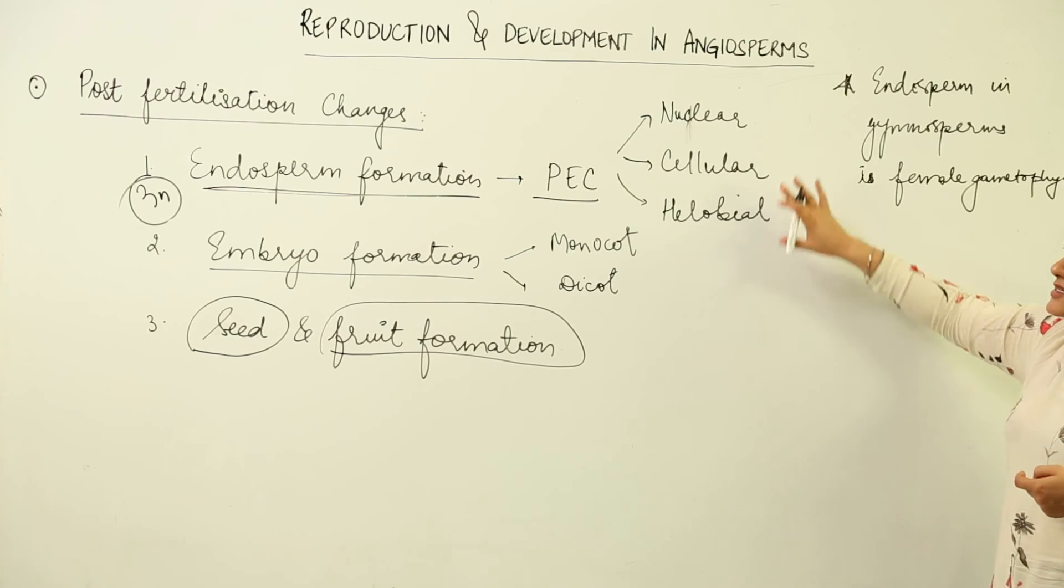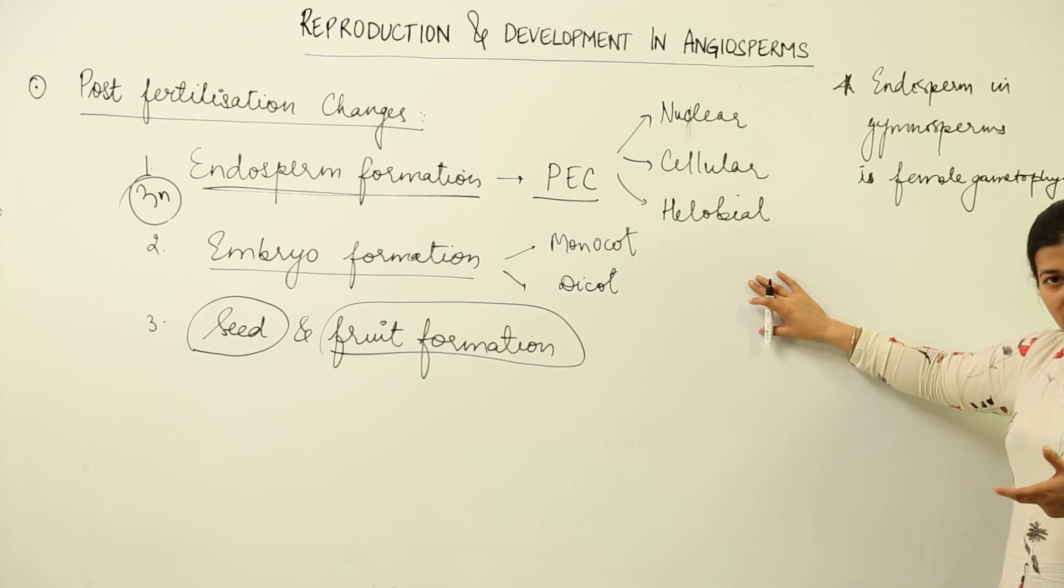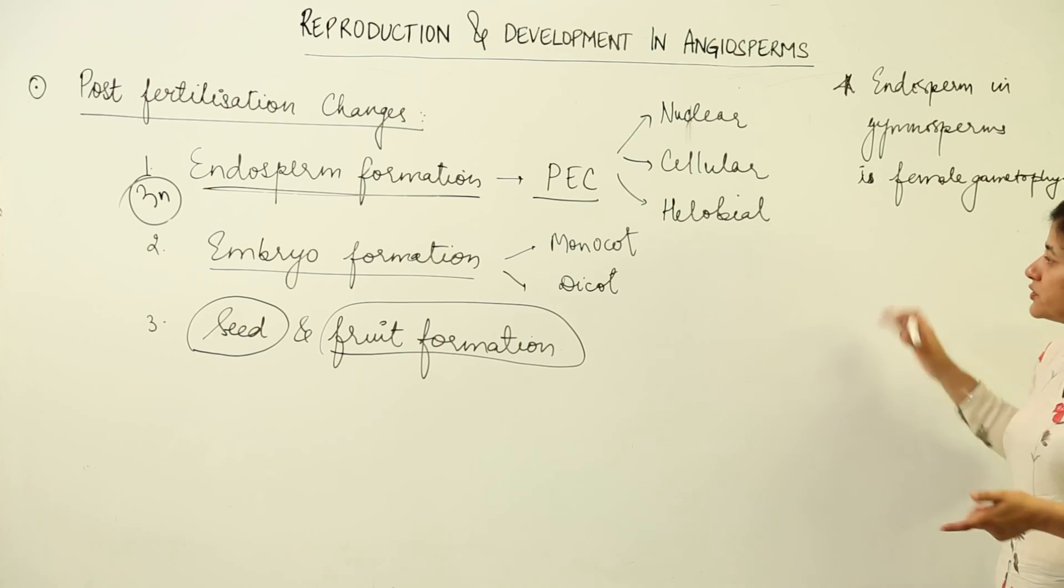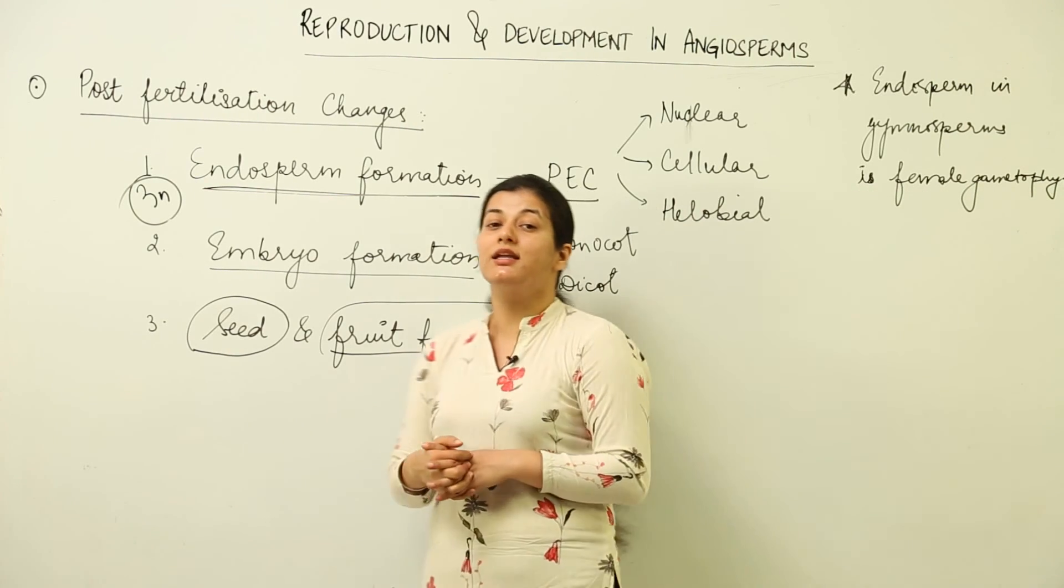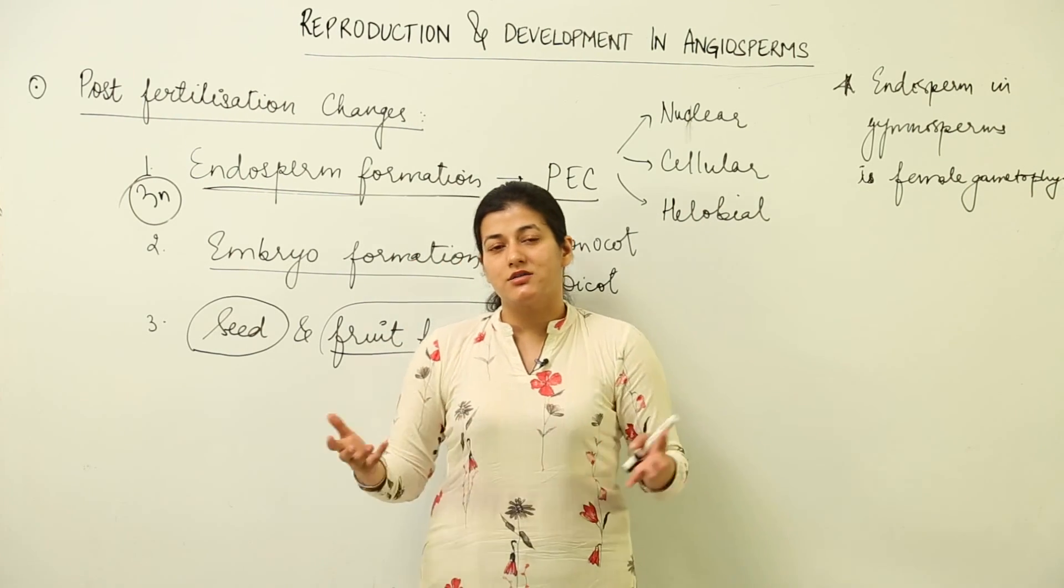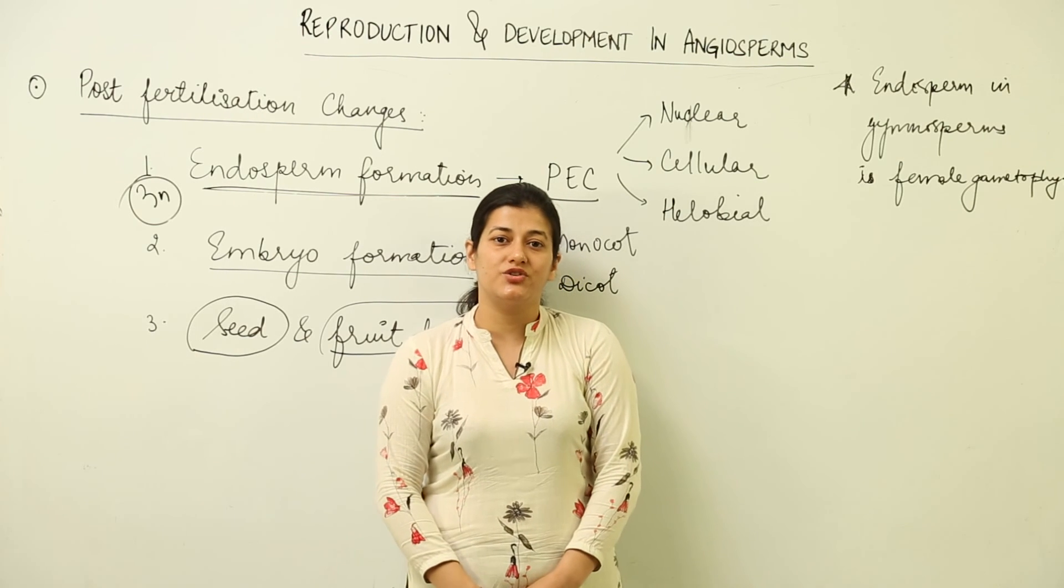So these are the post-fertilization changes that we observe once the zygote has been formed. This is what you have to deal with in coming lessons: what are the different types of endosperms seen in plants, how monocot and dicot embryos are formed in angiosperms, and how seed and fruit formation takes place and what is the significance of these processes. I hope you get an idea what post-fertilization changes are.